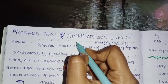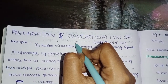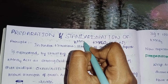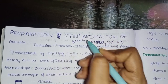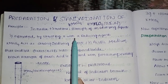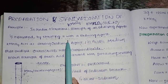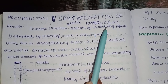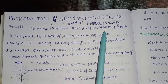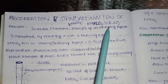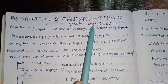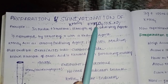Potassium permanganate is KMnO4. This is completely under redox titration, and KMnO4 is the oxidizing agent. We choose KMnO4 as the oxidizing agent for preparation and standardization.